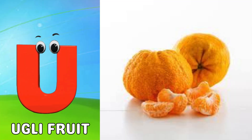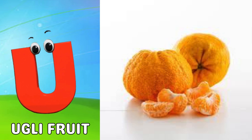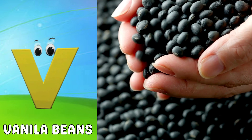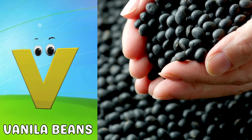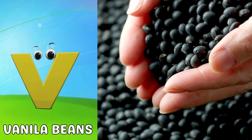U is for ugly fruit, u-u-u-ugly fruit. V is for vanilla beans, v-v-v-vanilla beans.